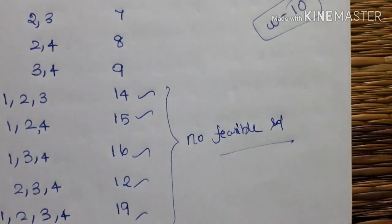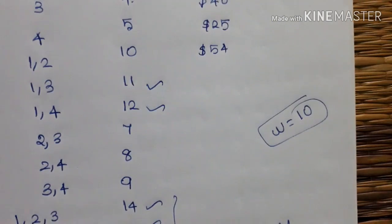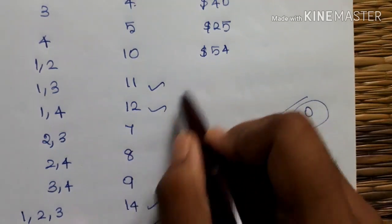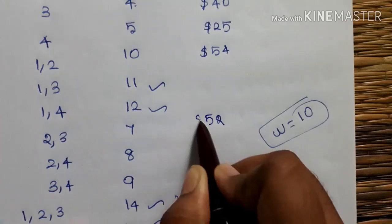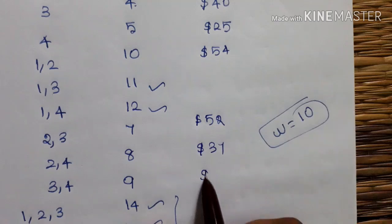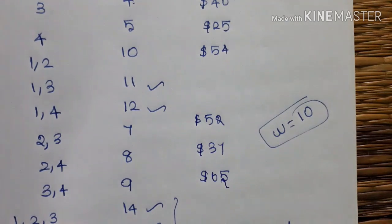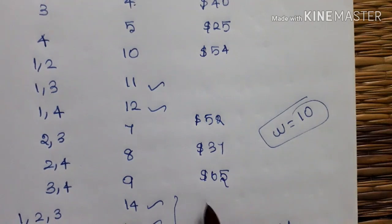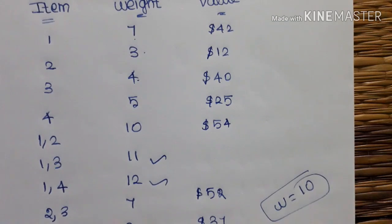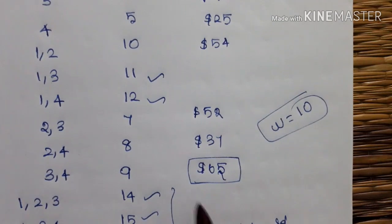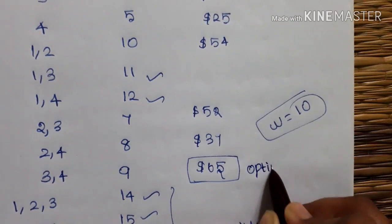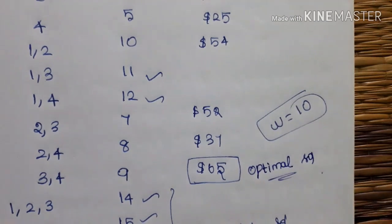So all of this is no feasible solution. Now let's calculate this. So 1,3 — we have 11. So this is $52, $37. So this is $65. Maximum value: $65. So we choose which maximum value. This is the optimal solution. That's the problem.